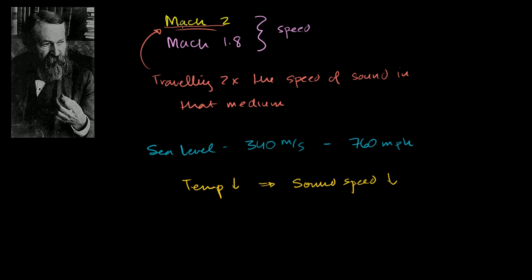So you might say, hey, does that mean if someone's traveling at Mach 2, they're definitely traveling at 680 meters per second or 1,520 miles per hour? And of course, whenever someone gives you an airspeed, it's relative to the air. The answer is no. They're probably going to be traveling a little bit slower than that, because at the altitude they're traveling, the speed of sound is slower.